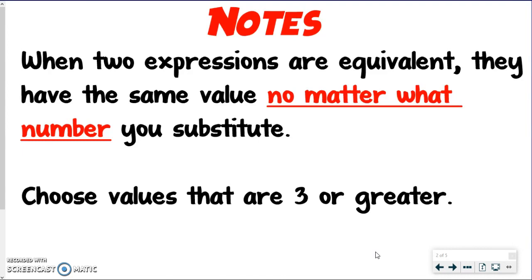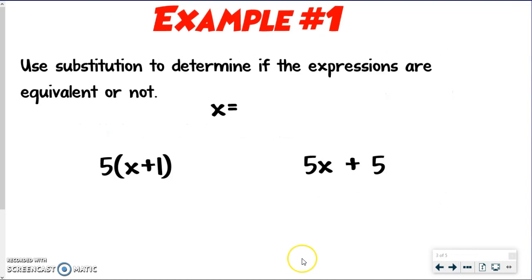So really, we should be testing these more than once, but we're going to just start with picking one number. But if you have a time where you substitute with a number and it doesn't work, that means they're not equivalent, even if it worked for another number. That's why we want to make sure we're using numbers 3 or greater, just to try and avoid those times where they seem equivalent when maybe they're not. All right, enough of me chatting about that. Let's get into our examples.